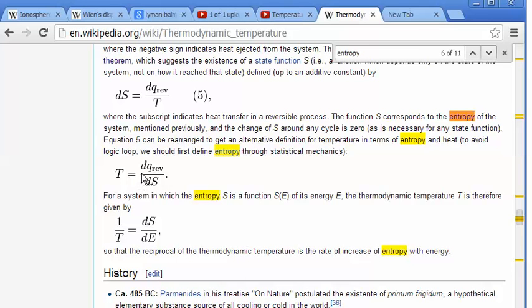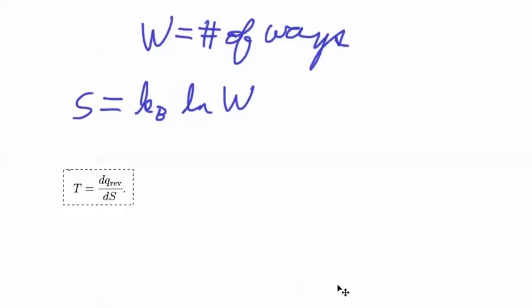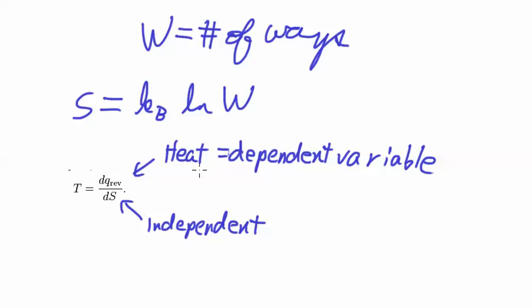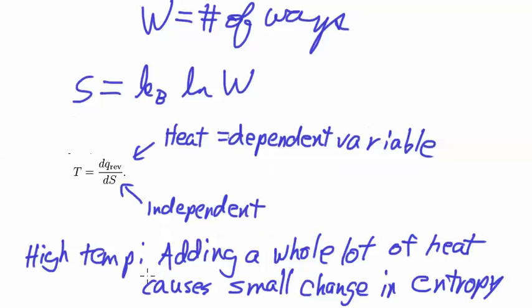And here is a definition of temperature, which is the temperature is the change in heat added to a reversible system divided by the change in entropy. Now this is an awkward equation because in general, things are like, well, this S is the independent variable and the heat you add to the system is a dependent variable. That's what would be indicated by the way this is set up.